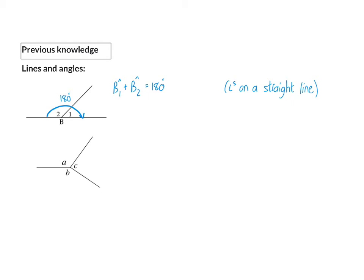Next up, we have three angles coming together at a specific point and going right around, and then we know that they add up to 360 degrees. So A plus B plus C is 360 degrees, and my reason for this is angles around a point.